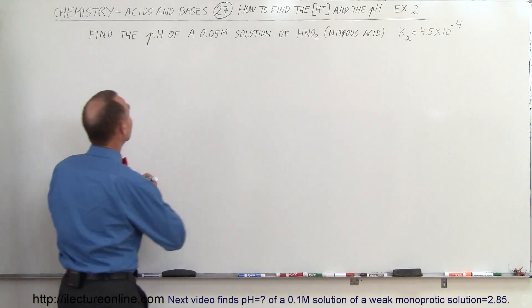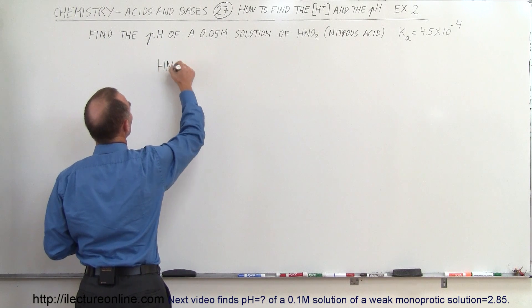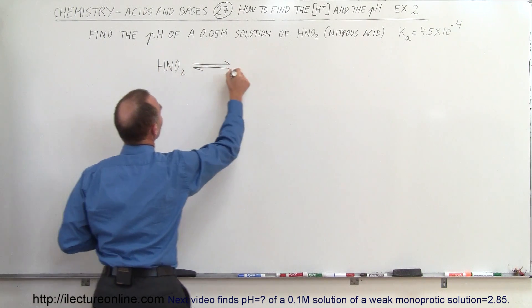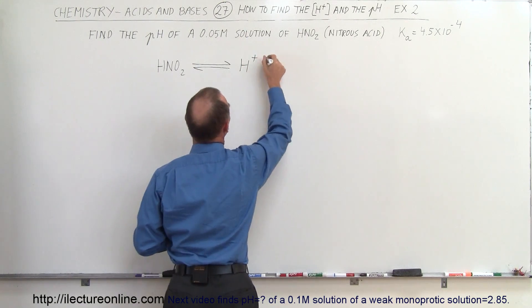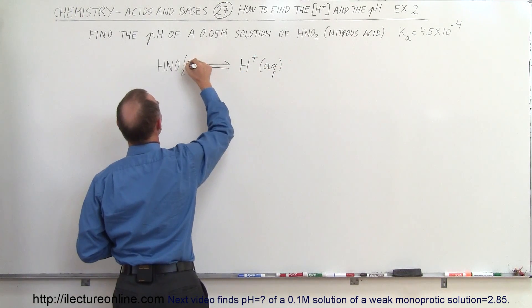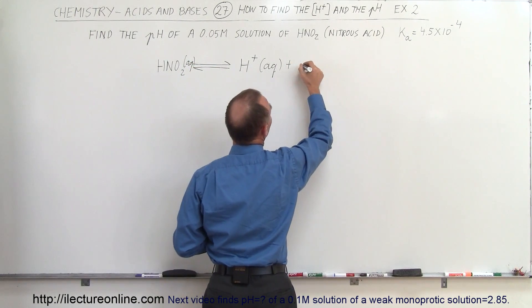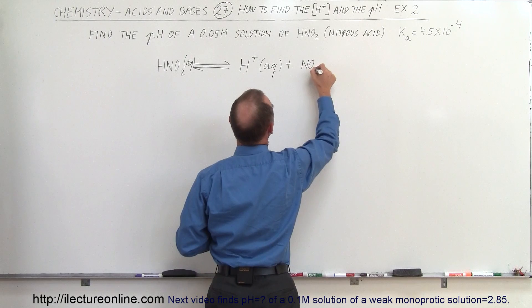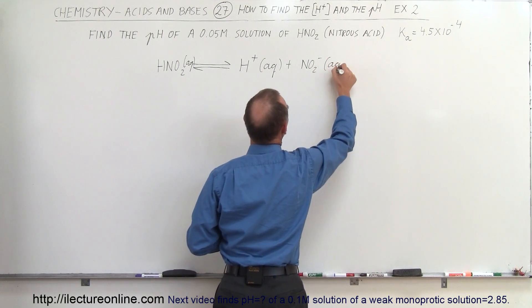Let's start out with the equation. We have nitrous acid, HNO₂, which will partially ionize into the hydrogen ion and the conjugate base. This is an aqueous solution, and so we get plus NO₂ minus, also in aqueous solution.